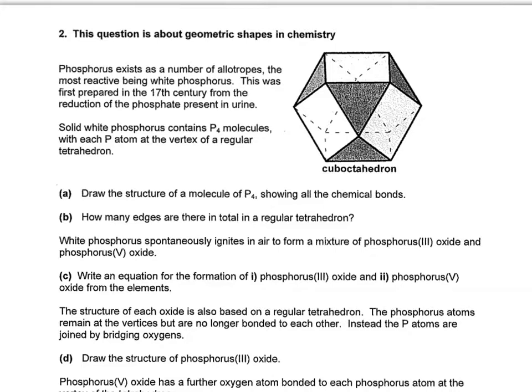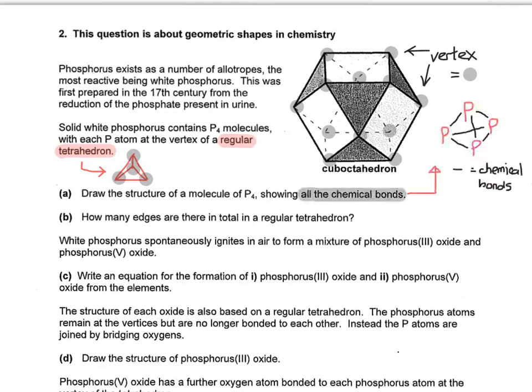So then it says that solid white phosphorus contains P4 molecules with each P atom at the vertex of a regular tetrahedron. So just to illustrate what a vertex is, I've highlighted the vertices, which is plural, on the cube octahedron that's given as an example there. So it's essentially like the corners of a geometric shape. So if we take a regular tetrahedron, what we can do is place a P atom at the vertex of each. So you can see that there's actually four phosphorus atoms. So we can draw it up like that with the black line representing the chemical bonds and the phosphorus atoms sitting at the vertices of our regular tetrahedron.